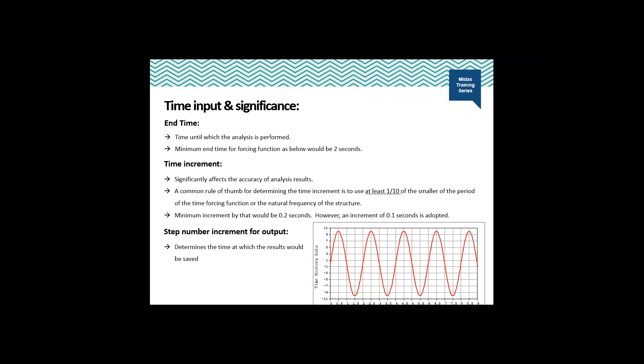Time increment significantly affects the accuracy of the results. A common rule of thumb for determining the time increment is to use at least one-tenth the length of the smaller of the period of the forcing function or the natural frequency of the structure. The minimum increment by that rule would be 0.2 seconds in this case; however, an increment of 0.1 is adopted — I'll explain later why.